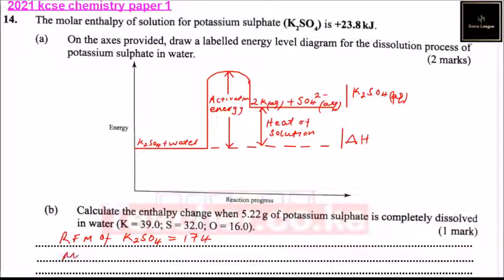So we have moles of potassium sulfate is equal to the number of grams of potassium sulfate, 5.22, divided by relative molecular mass, which is 174. And when you divide that, you get 0.03.